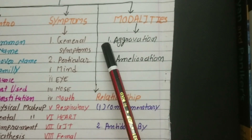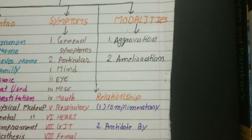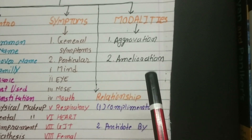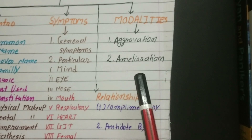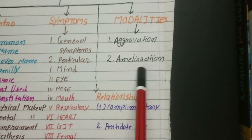After that come our modalities. In modalities there are particularly two points: aggravation and amelioration. In aggravation, certain things — whether weather, drinks, or food — cause the patient's symptoms to worsen and become much more intense. This is called aggravation. Amelioration means that certain weather conditions or factors give the patient some relief from their symptoms.